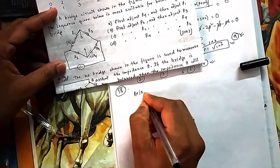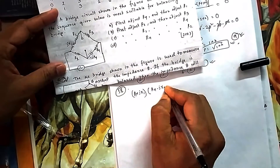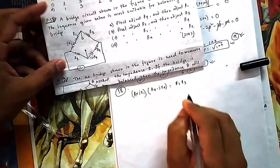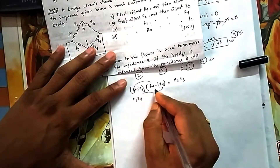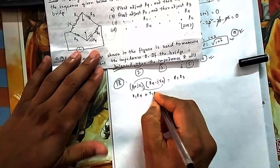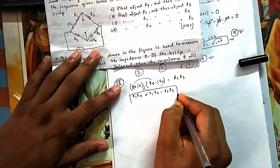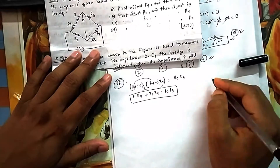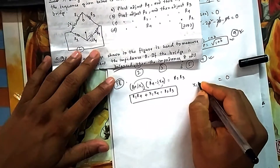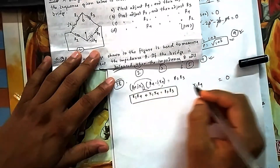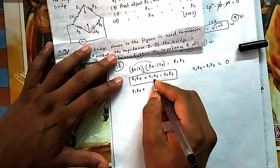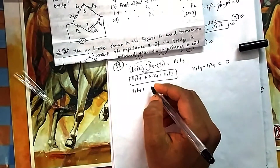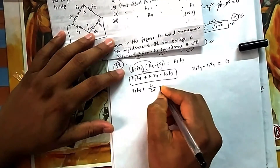The balance condition gives: (R1 + jX1) × R4 − jX4 = R2·R3. Separating real and imaginary parts: the real part gives R1·R4 + X1·X4 = R2·R3 (since −j² makes it positive). The imaginary part equals zero, giving X1·R4 − R1·X4 = 0. Substituting X1 = ωL1 and X4 = 1/(ωC4), the ω terms cancel, yielding L1/C4 = R2·R3.